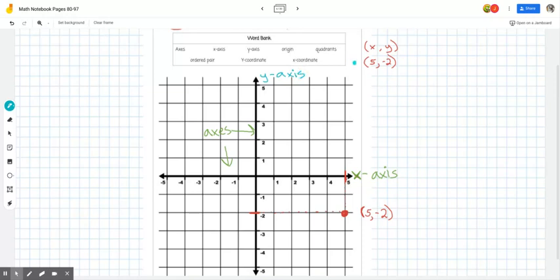Okay. So we did axes, x-axis, y-axis. Next is origin. Now the origin is the very center of your coordinate grid. This is the origin. Now the origin also has an ordered pair of (0, 0). Right in the middle is the origin.